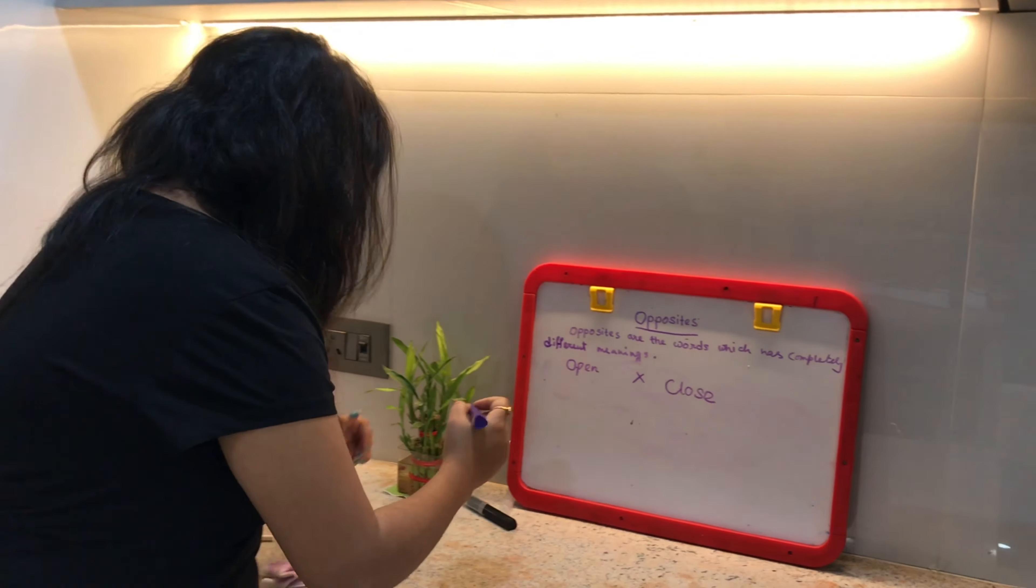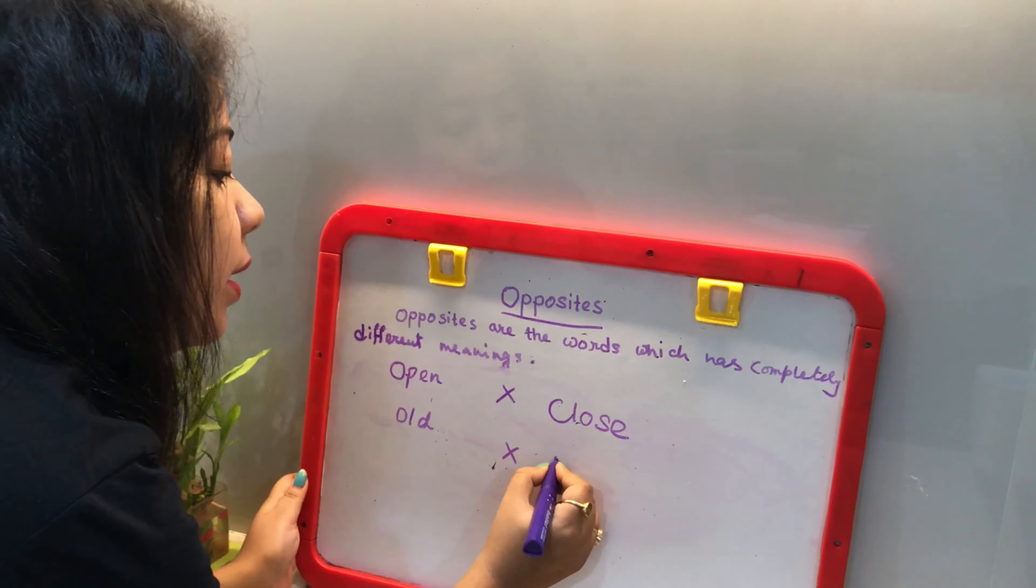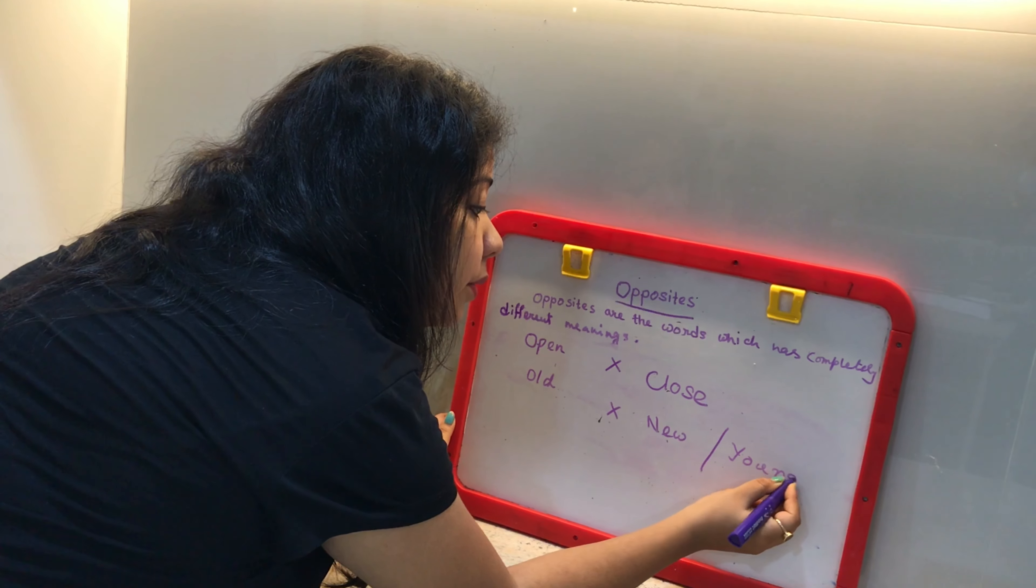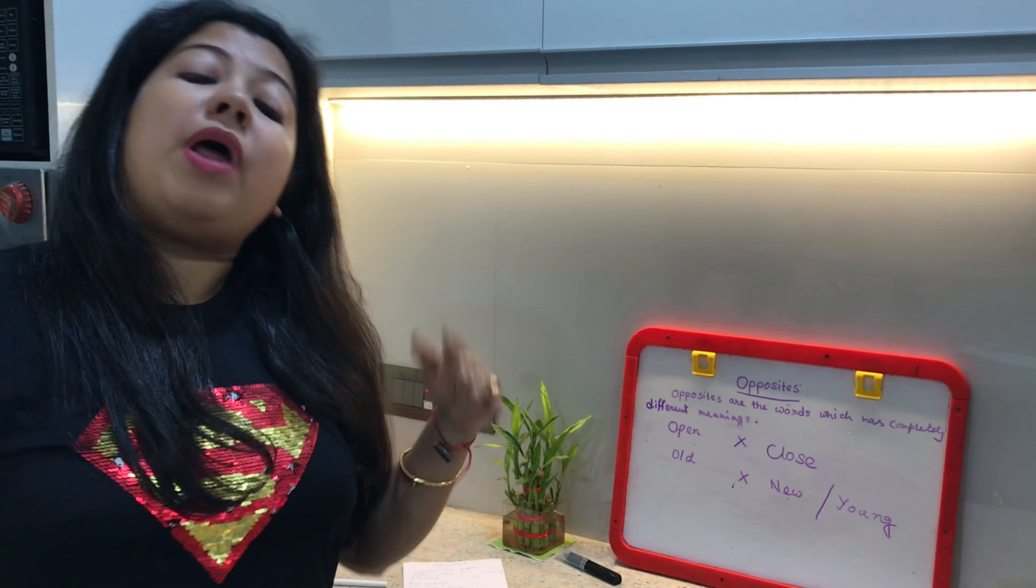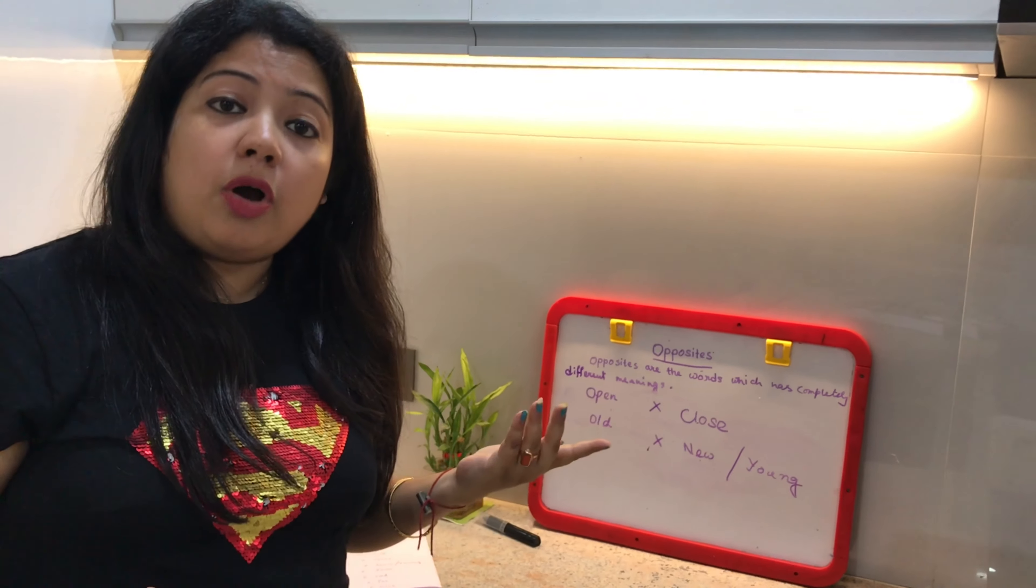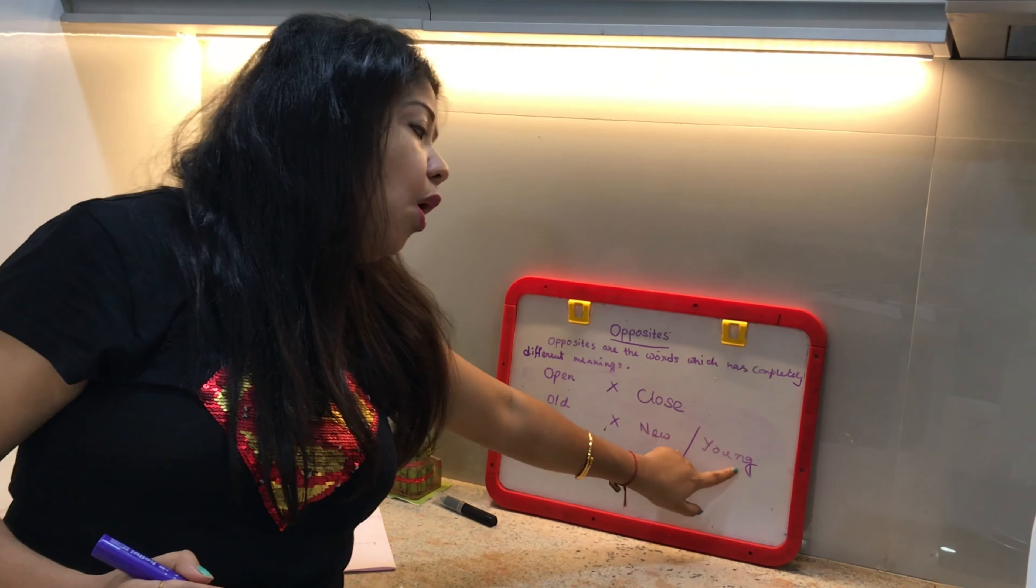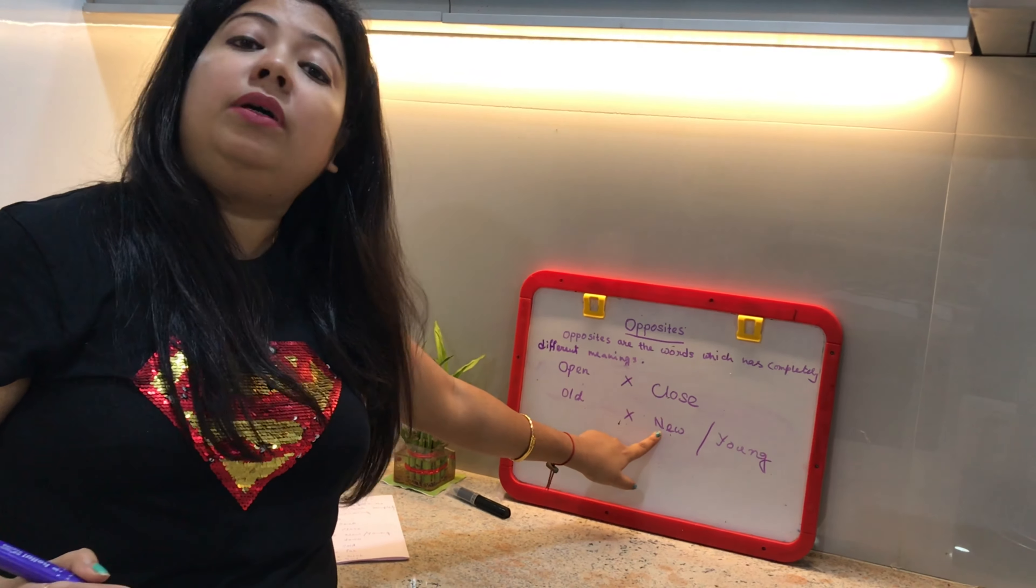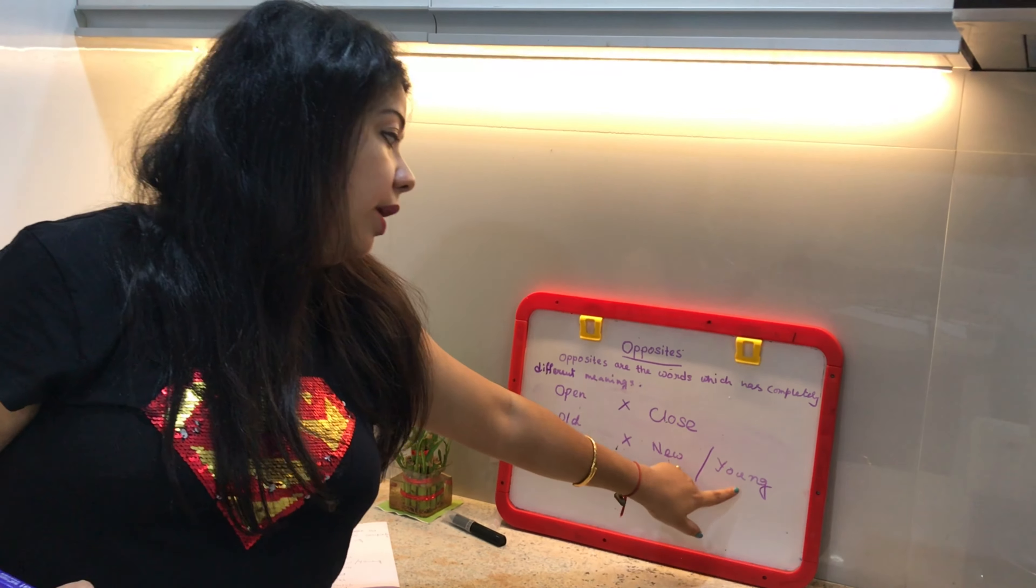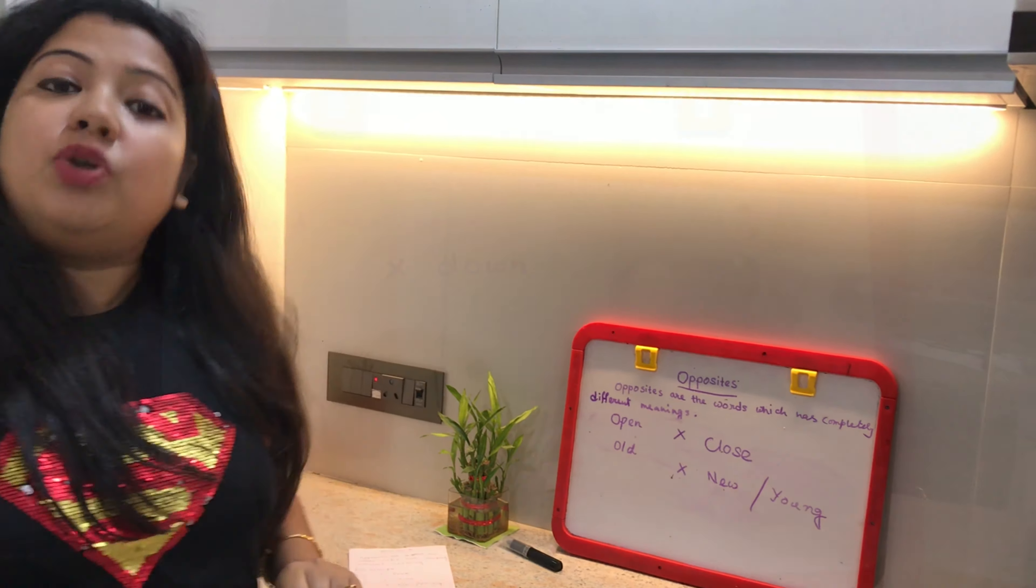Old meaning old, opposite is new or young - both are correct. New means new and young means young. In translation, old means buro, new means notun, and young means tarun/jawan.